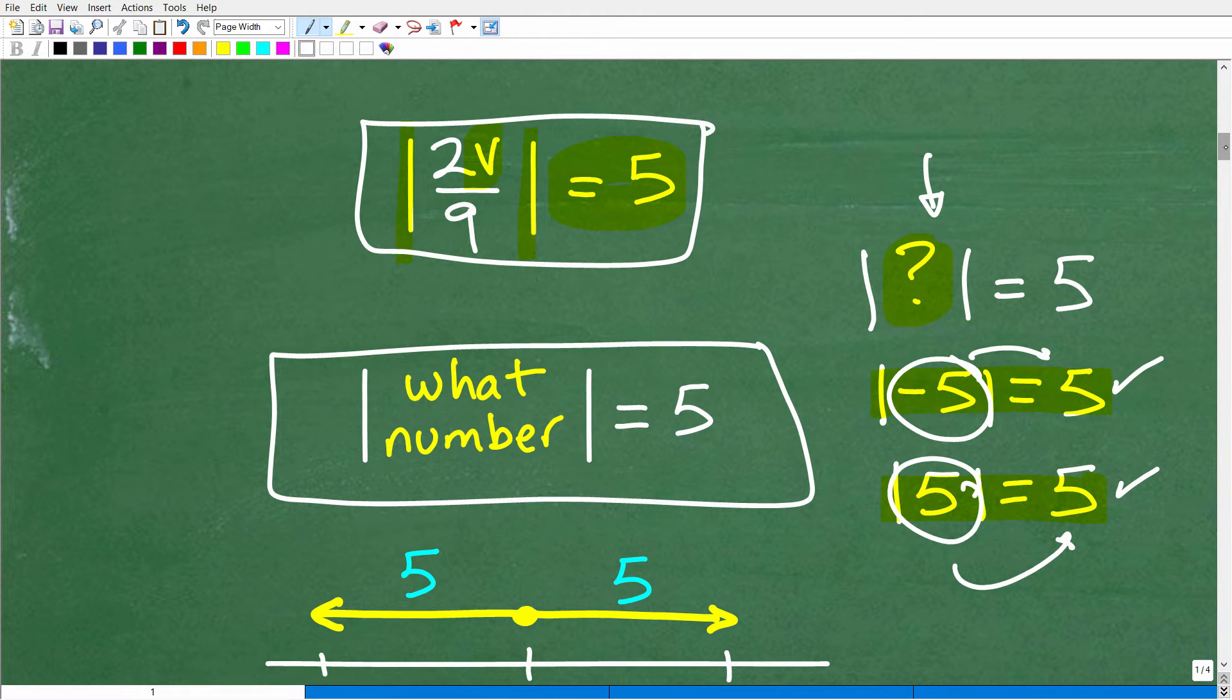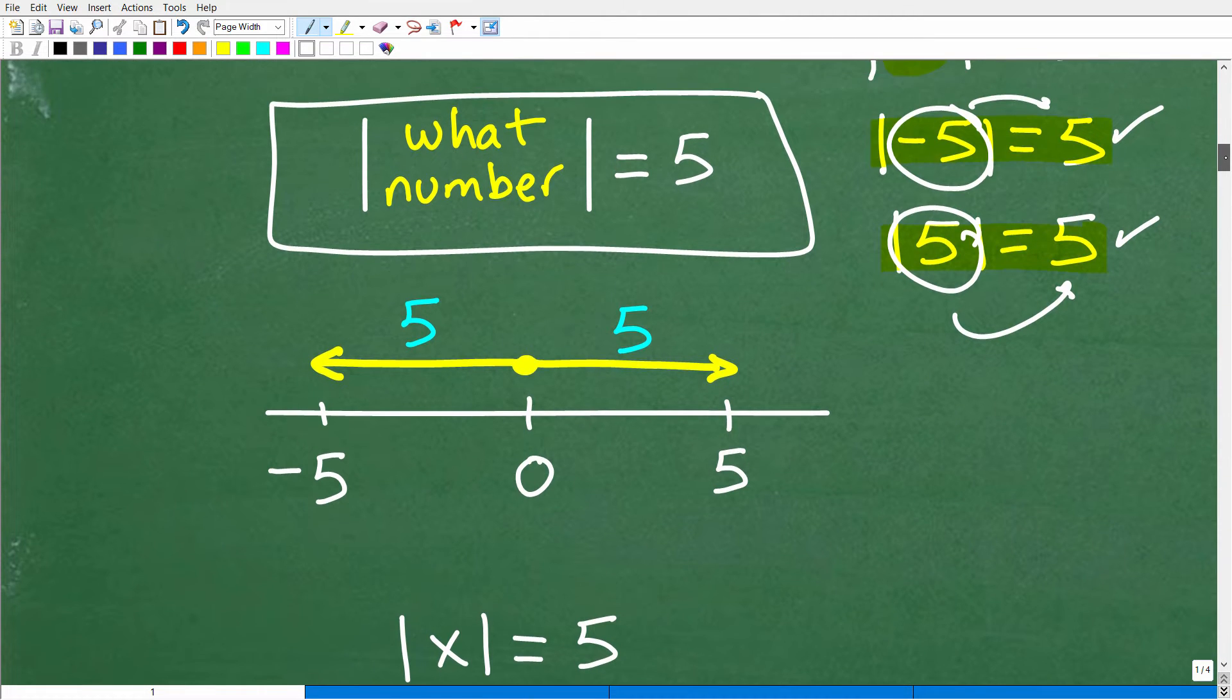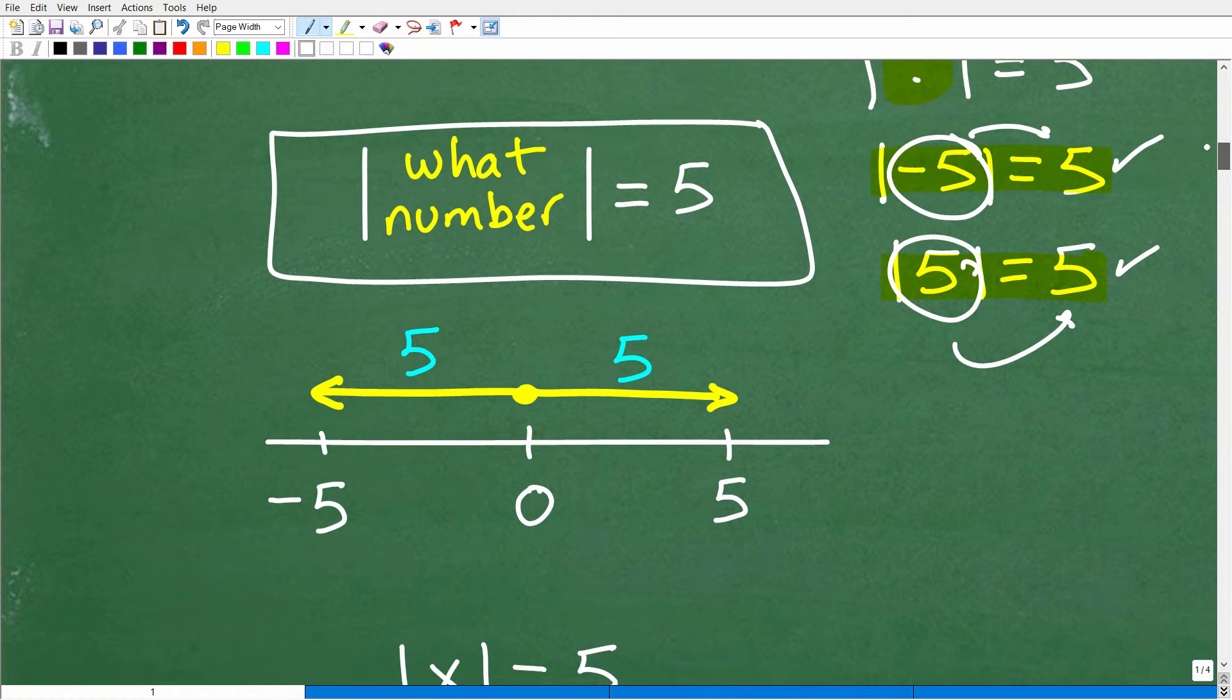But let's actually look at the absolute value's definition. So what is the definition of absolute value? Well, the definition of absolute value is the distance a number is from 0 on a number line. So here's my little number line here, here's 0, here's 5, and here's negative 5.